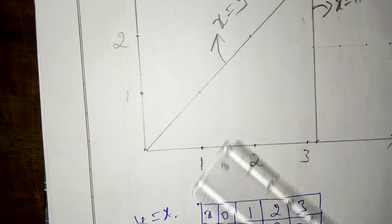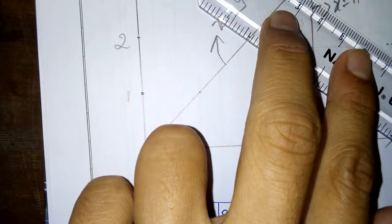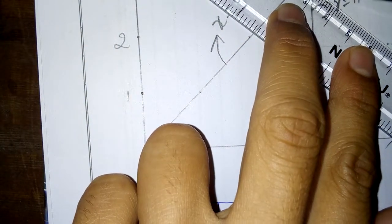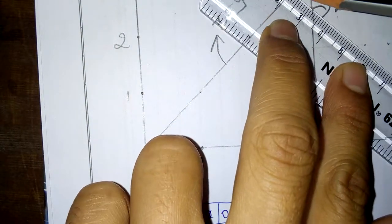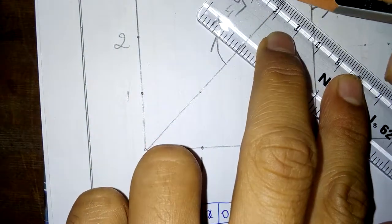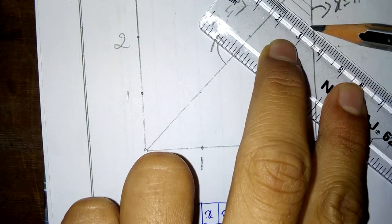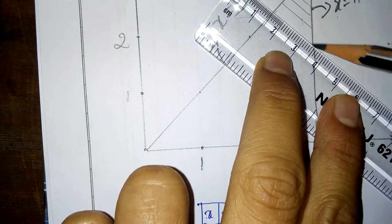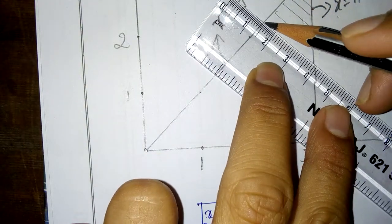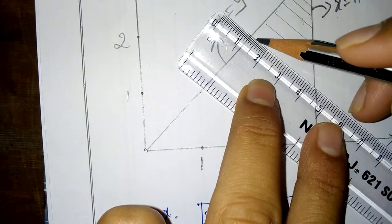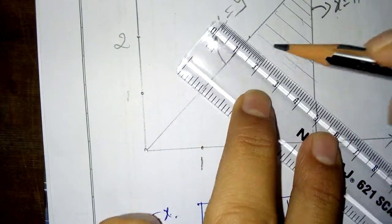Now this is the required region. So we can shade it. This is the required region.